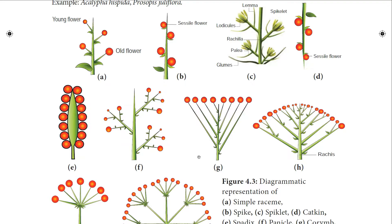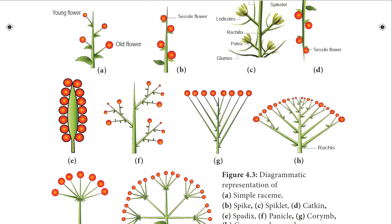Next we have the main axis shortened type. Here the main axis is shortened and the lateral branches are elongated more than the main axis. The first type is corymb: an inflorescence with shorter pedicellate flowers placed at the top and longer pedicellate flowers at the bottom, so that all flowers are at the same level, forming a convex or flat-topped racemose inflorescence. Example: Caesalpinia.